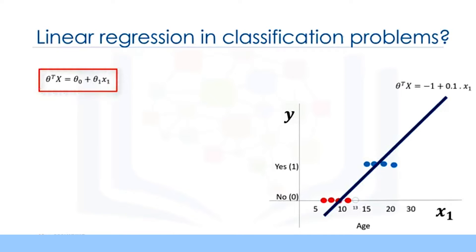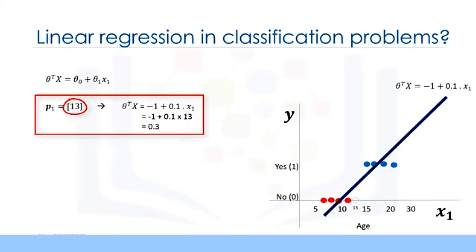Now, we can use this regression line to predict the churn of the new customer. For example, for our customer, or let's say a data point with x value of age equals 13, we can plug the value into the line formula, and the y value is calculated and returns a number. For instance, for p1 point, we have theta transpose x equals minus 1 plus 0.1 times x1 equals minus 1 plus 0.1 times 13 equals 0.3. We can show it on our graph. Now we can define a threshold here, for example, at 0.5 to define the class.